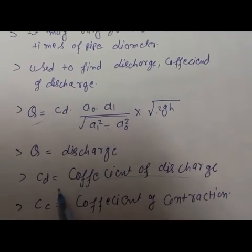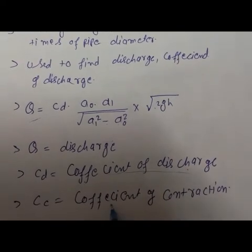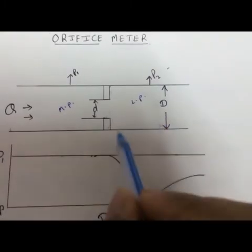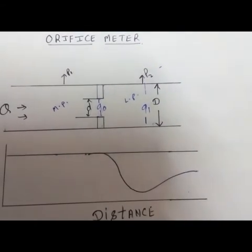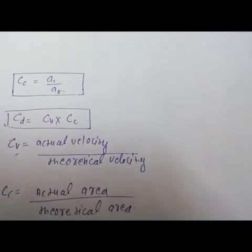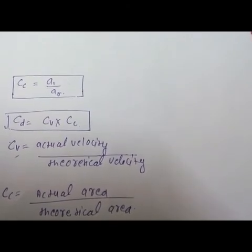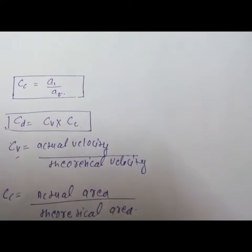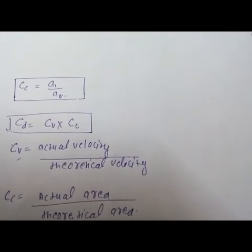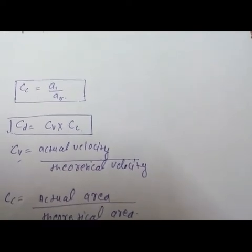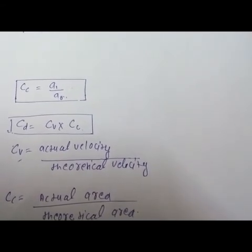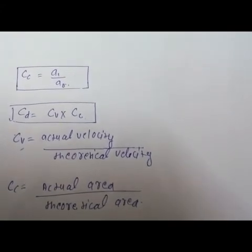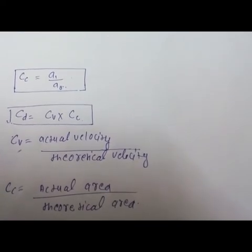Here Q is the discharge, CD is the coefficient of discharge, and CC is the coefficient of contraction. This area will be A0 and this area will be A1. CC is equal to A1 upon A0, where A1 is the area of the larger section (area of pipe) and A0 is the area of the orifice meter. CD equals coefficient of velocity into coefficient of contraction. The coefficient of velocity is the ratio of actual velocity to theoretical velocity, and CC is the ratio of actual area to theoretical area.